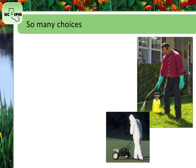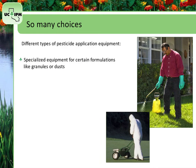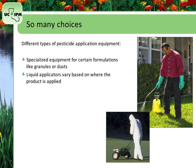In this section, you'll take a look at different types of pesticide application equipment. Equipment can range from very simple to very complex. Some equipment is specialized for applying only certain formulations, such as granules or dusts. Even for one formulation type, like liquids, there may be several different types of equipment available, depending on the type of application, such as in buildings or residences, to crops, in water, or to soil, or whether they are spot treatments or broadcast treatments over a larger area.